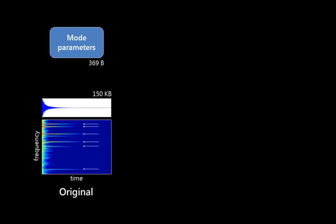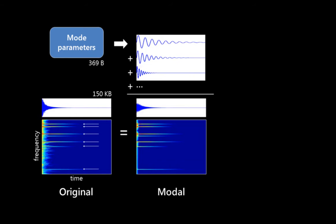In the original source clip, we compute a spectrogram, which shows the frequency content of the clip over time. From this spectrogram, we identify peaks in frequency corresponding to resonant modes. The modes can be stored quite compactly.